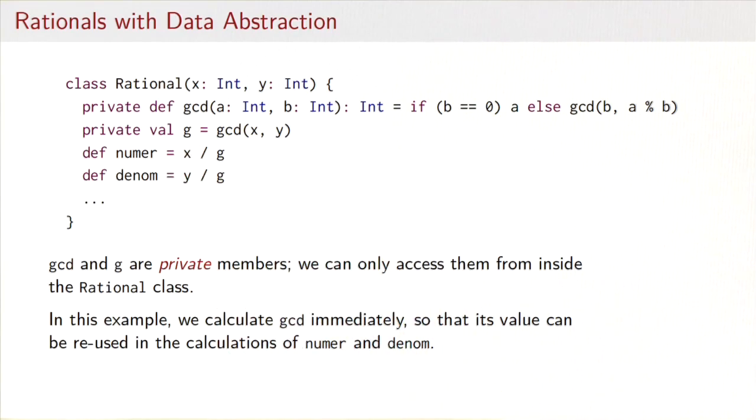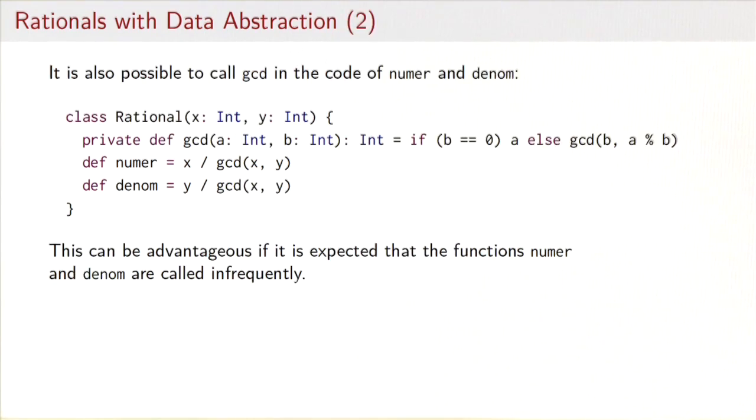We could also change that. We could call gcd in the code of numer and denom like that. So that way we avoid the additional field g and it could be advantageous if the functions numer and denom are not called very often. Then we can amortize the additional cost of the gcd operations here.